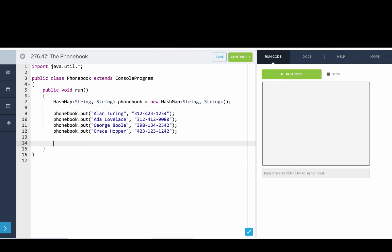Great. And now let's test out the get method. How can we get something out of the map? So we'll say string Alan's number equals phonebook dot get Alan Turing. And here we should expect to get that first number 312-423-1234. So we'll print that out to test. We'll say system out dot print line Alan's number plus Alan's number. Let's run that.